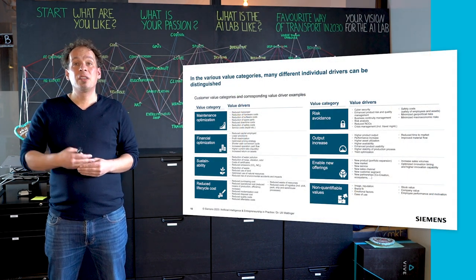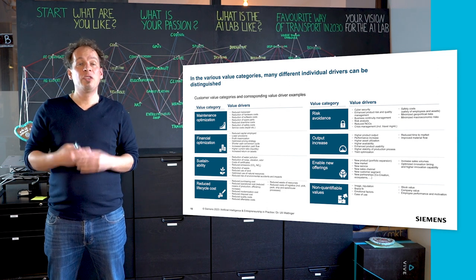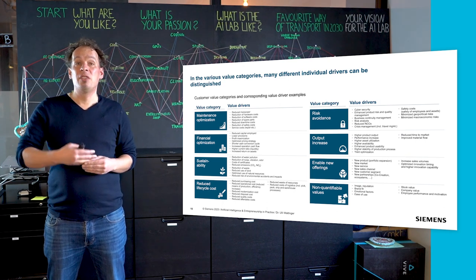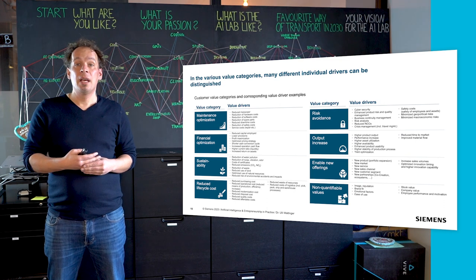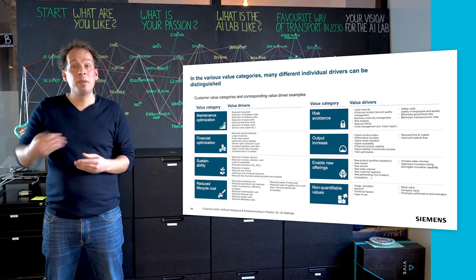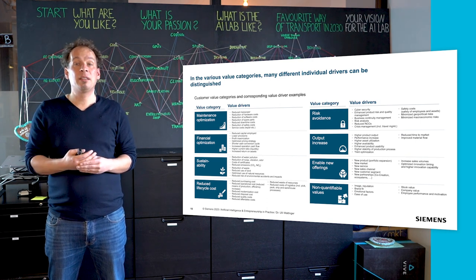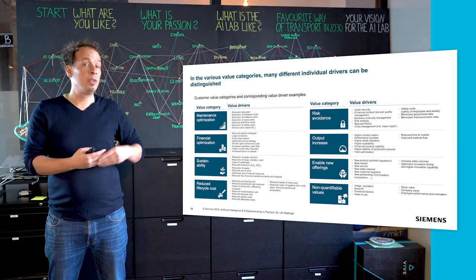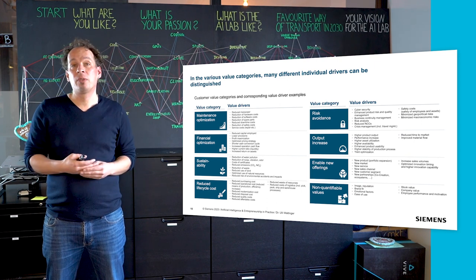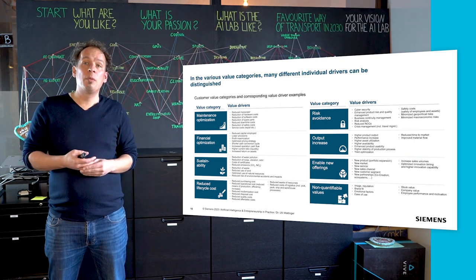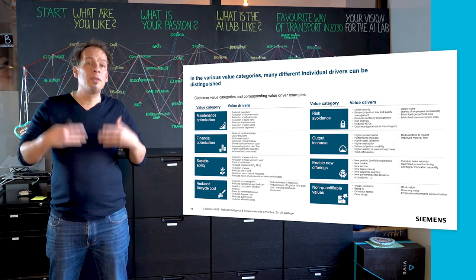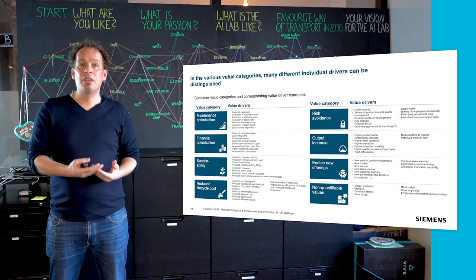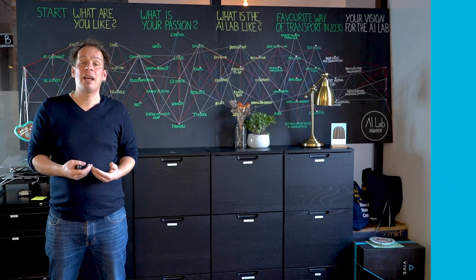In these categories there are typical category drivers — customer value cries and their driving examples. In maintenance optimization, for instance, it's using manpower or reducing hardware costs. In output increase, it could be higher product output, performance increases, higher asset utility, or higher availability. For sustainability, you can think about reducing emissions, reducing waste, reducing idle time, or reducing natural resources. Approaching your value proposition and return on invest aspects needs to cover more than just the prediction — think on customer value categories and the value drivers within those categories.